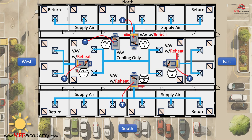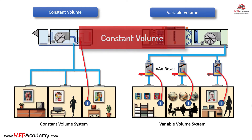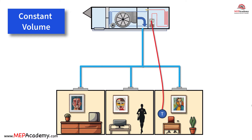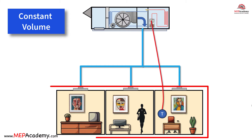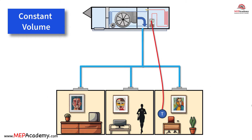As you can see in this diagram, each room has its own controller and can determine whether they want heating or cooling. Constant volume systems have limitations when it comes to zoning. In constant volume systems, the same airflow is delivered to all zones simultaneously. This lack of individual control can lead to variations in temperature and comfort levels, and these systems struggle to adapt to changes in occupancy and temperature requirements within different zones.